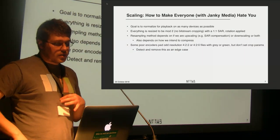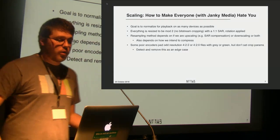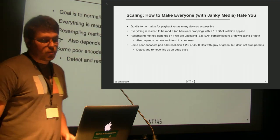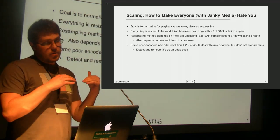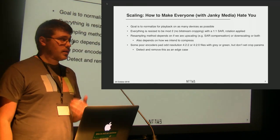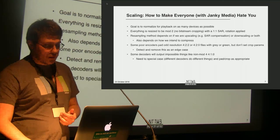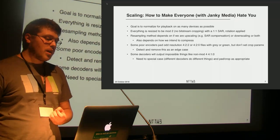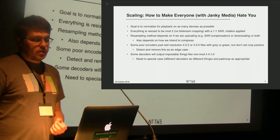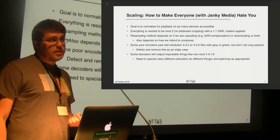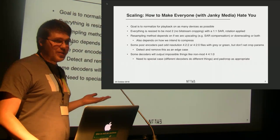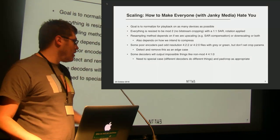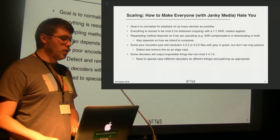Some encoders will pad 4:2:2 or 4:2:0 files with gray or zeros for green and won't flag this in any cropping parameter, so you have to check the last line of the video, do a memcmp against zero, and crop it off. Some decoders will output impossible things like odd-resolution 4:1:0, which makes no sense. You need to know exactly how the decoder is going to output that and whether you'll over-read or under-read.